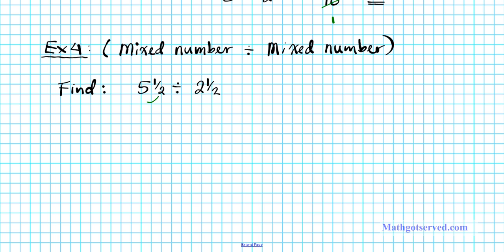To convert, multiply the denominator by the whole number and then add it to the numerator — that becomes our new numerator. So 2 times 5 is 10, plus 1 is 11. So we have 11 over 2. Apply the same procedure to 2 and a half: 2 times 2 is 4, and 4 plus 1 is 5. So we have 5 over 2.